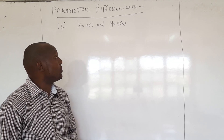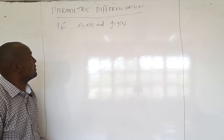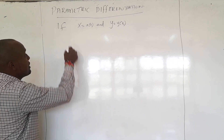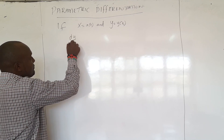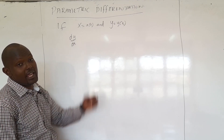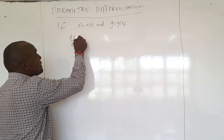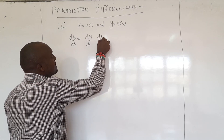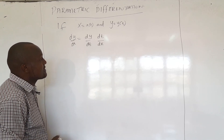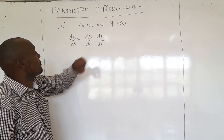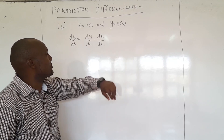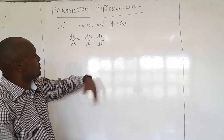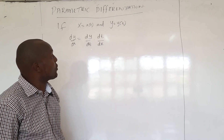Here I have given just an illustration. If you are given x as a function of T and y as a function of T, and you are required to get dy/dx, then dy/dx equals dy/dt times dt/dx. Since x is a function of T and y is a function of T, we can differentiate x with respect to T to get one result, and differentiate y with respect to T to get another.